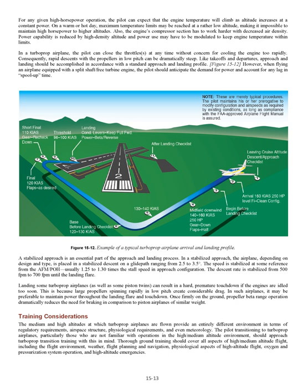A stabilized approach is an essential part of the approach and landing process. In a stabilized approach, the airplane is placed in a stabilized descent on a glide path ranging from 2.5 to 3.5 degrees. The speed is stabilized at some reference from the AFM/POH, usually 1.25 to 1.30 times the stall speed in approach configuration. The descent rate is stabilized from 500 fpm to 700 fpm until the landing flare. Landing some turboprop airplanes can result in a hard, premature touchdown if the engines are idled too soon, because large propellers spinning rapidly in low pitch create considerable drag. In such airplanes, it may be preferable to maintain power throughout the landing flare and touchdown. Once firmly on the ground, propeller beta range operation dramatically reduces the need for braking in comparison to piston airplanes of similar weight.